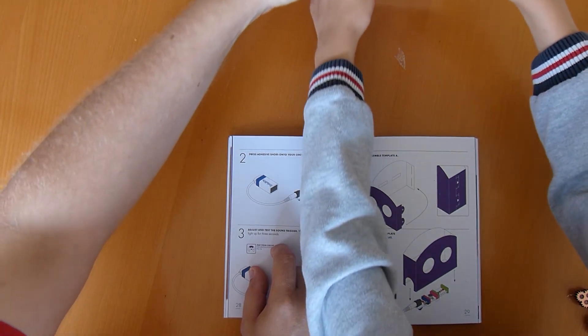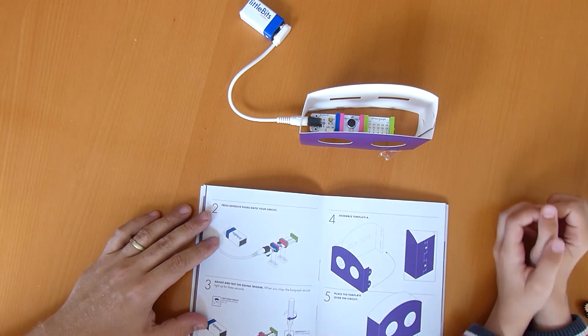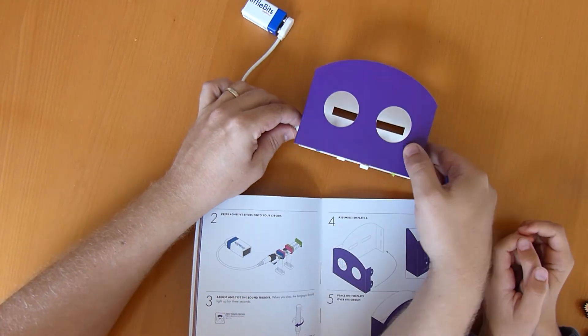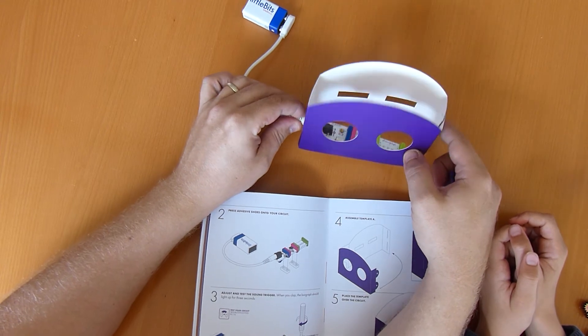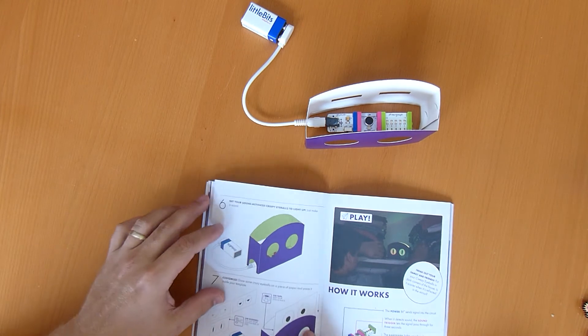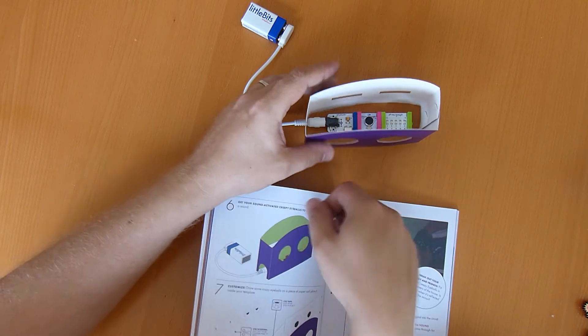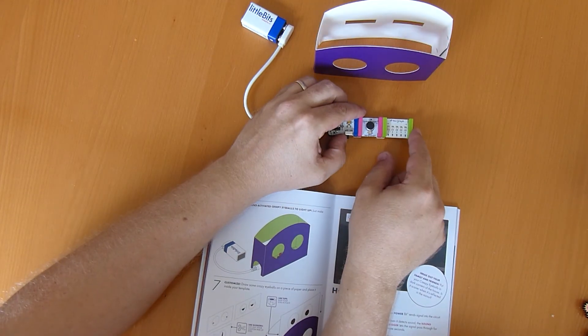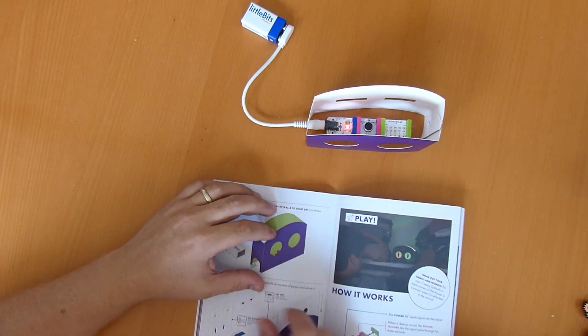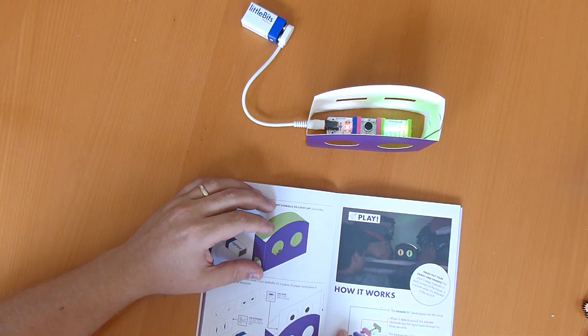So that's that bit. Now what's it say we've got to do? We have to place it on the magic. Place it on there. Is that what it's saying in here? Yeah, kind of looks like it. So if we turn it around for everyone else it's kind of got it in like that. Now get your sound-activated creepy eyeballs to light up. Just make a sound. We need to turn it on again.